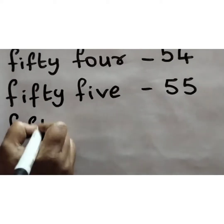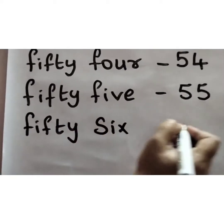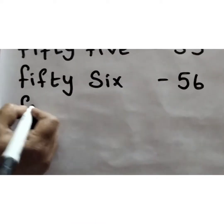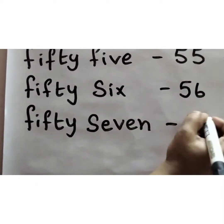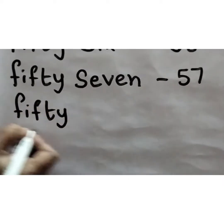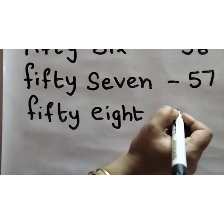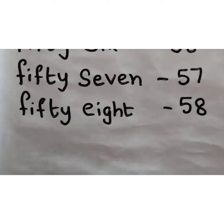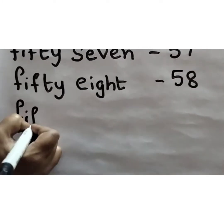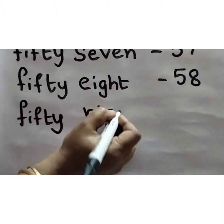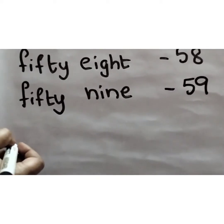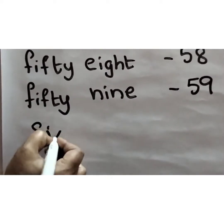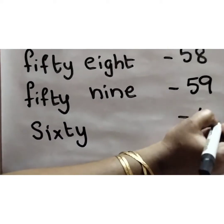What is the next number? Children? 56. F-I-F-T-Y S-I-X, 56. Fifty-seven. F-I-F-T-Y S-E-V-E-N, 57. Fifty-eight. F-I-F-T-Y E-I-G-H-T, 58. So while writing also, you say the spelling and write children. Okay? Fifty-nine. F-I-F-T-Y N-I-N-E, 59. What is the number after 59? It is 60. Isn't it? So S-I-X-T-Y, 60.